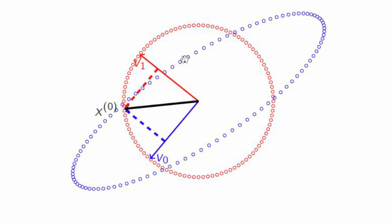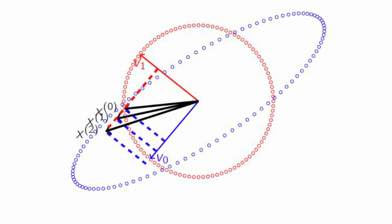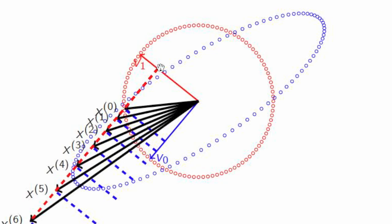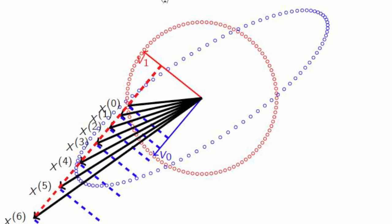x0 has some component in the direction of v0 and some in the direction of v1. If we hit x0 with A, we get x1. Notice that the component in the direction of v0 has been amplified by 1.25 — exactly what the theory tells us. The component in the direction of v1 wasn't amplified at all, because this matrix has a smaller eigenvalue equal to 1. You notice that x1 lies more in the direction of v0 than x0 did. Doing it again, the vector lies even more in the direction of v0. The component in v1 is not changing at all.